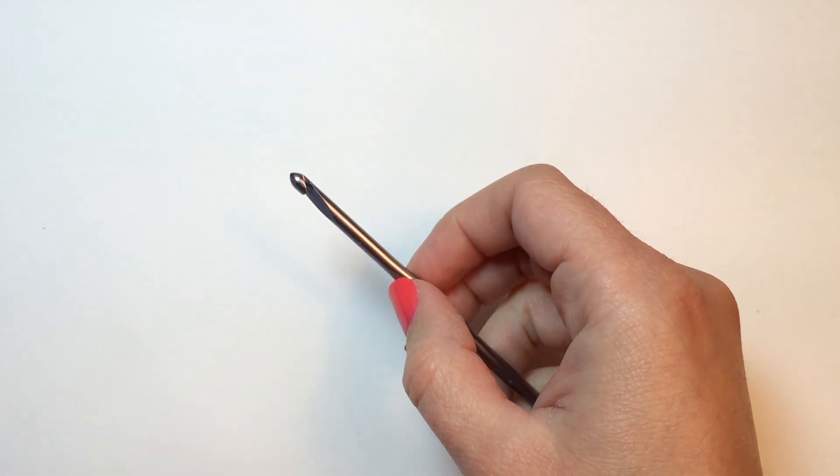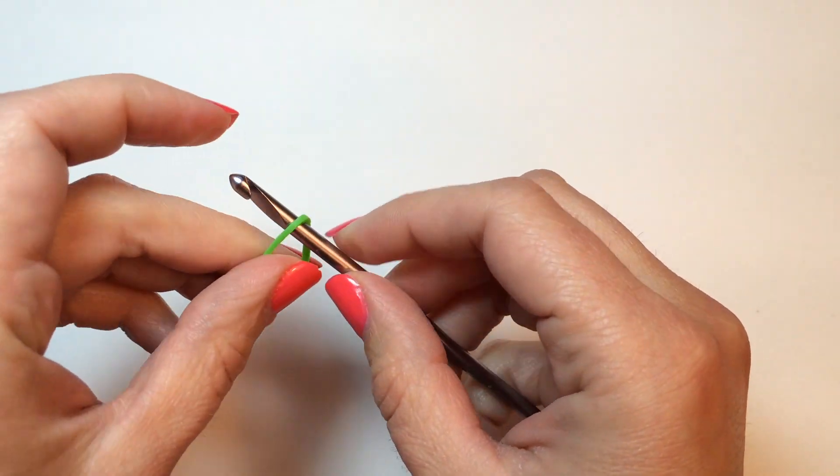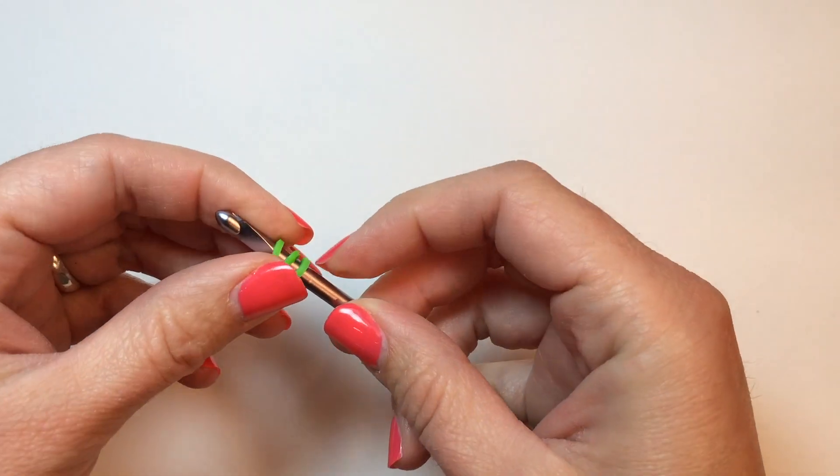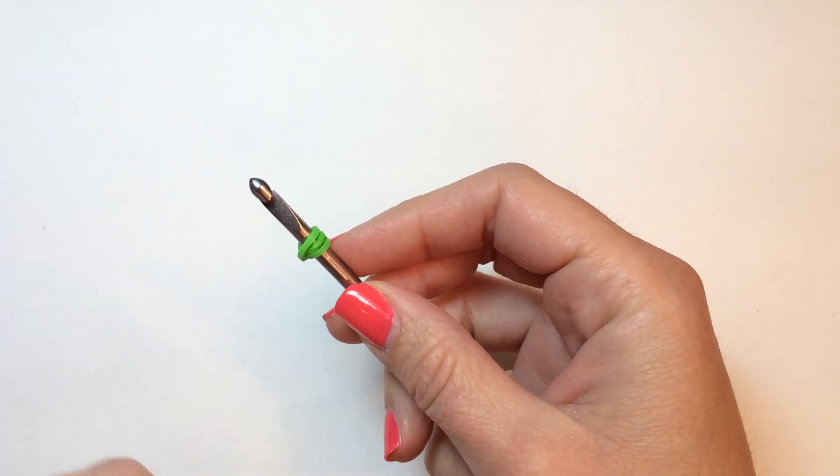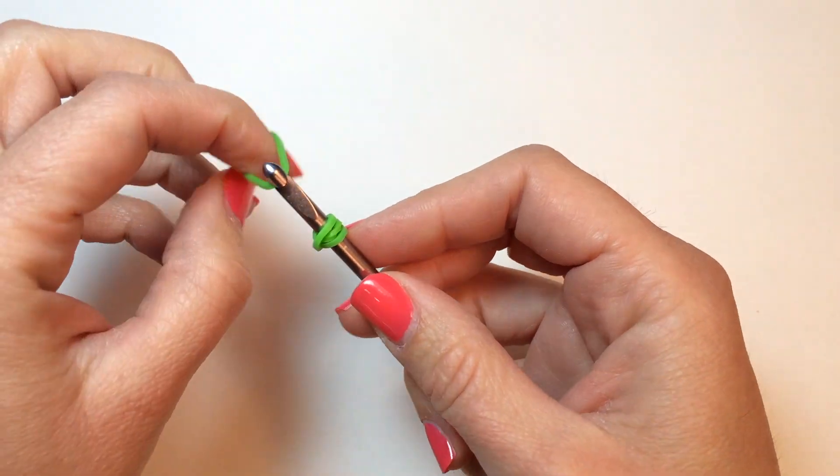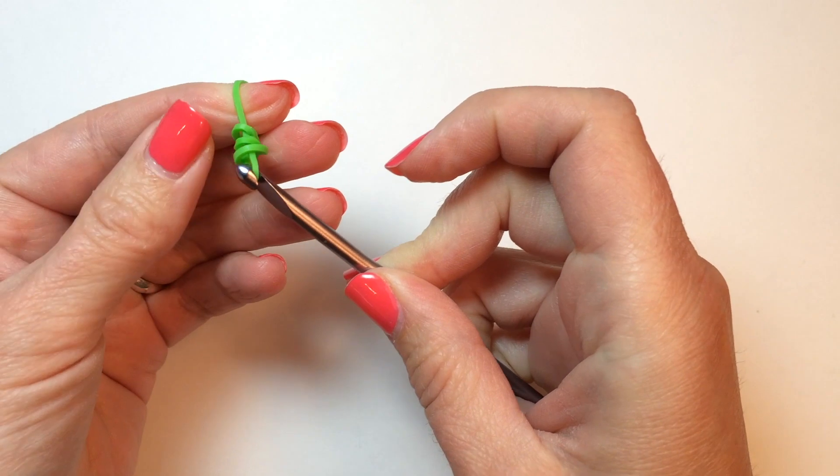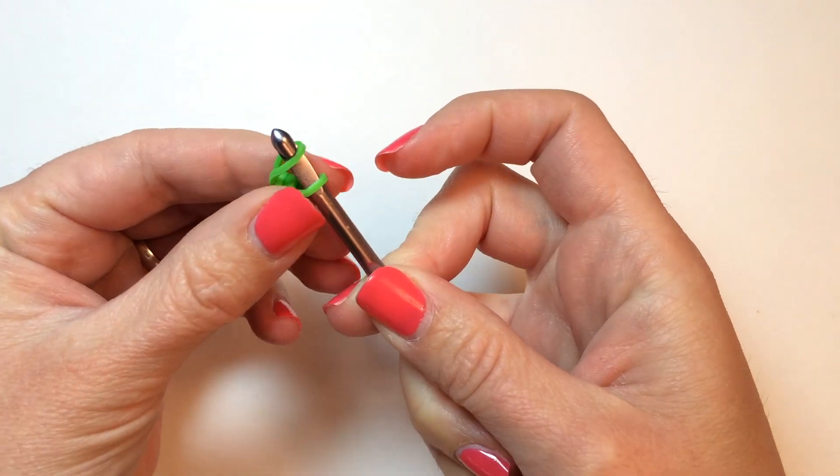Now, we're going to make the leaves. Take your green band, wrap it around your hook three times. Take a single green band, push the tripled over one to the center, and create another slip knot.